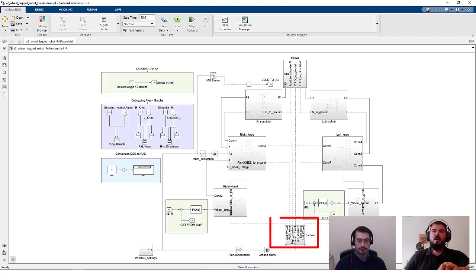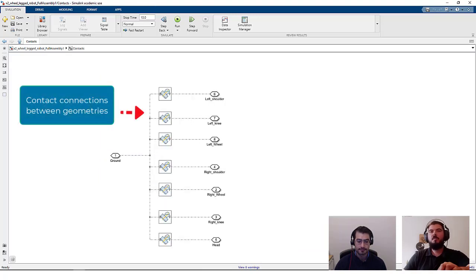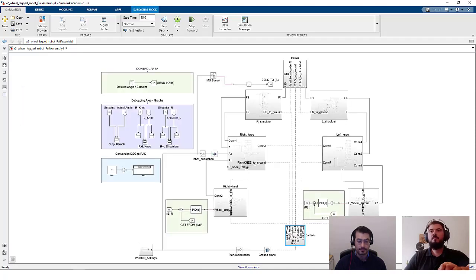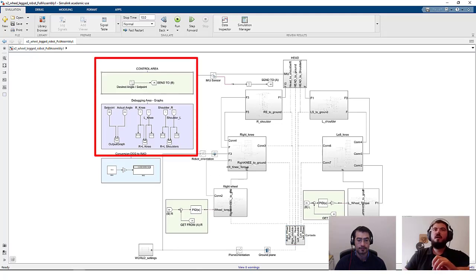Now at the bottom we have the contacts, and the contacts are simply some blocks grouped into a subsystem which allow interaction between the ground and the wheels so that the robot would not fall through the ground when the simulation is working. Now the debugging area to control more easily each independent subsystem for the actuators.